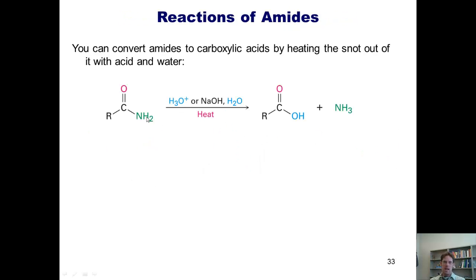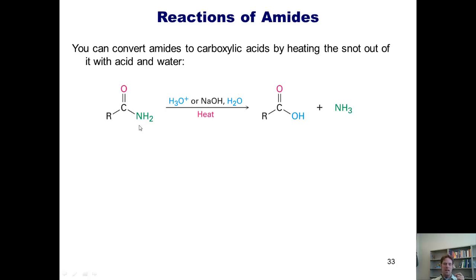You can also convert amides back into carboxylic acids. As I mentioned, an NH2 is actually a worse leaving group than an OH, so it's pretty hard to have an OH come in and kick off an NH2. The only way you can really do this is by treating it with an excessive amount of acid or base with water as the solvent and heating it extensively. That way you can displace the NH2 with an OH, forming a carboxylic acid and releasing ammonia as a gas.